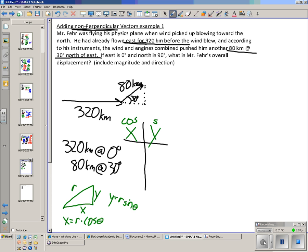So I'm going to write a little reminder to myself that cosine goes for x and sine goes for y. So I have 320 kilometers times the cosine of zero and that's easy, that's just 320. 320 times the sine of zero, well the sine of zero is zero so that goes away.